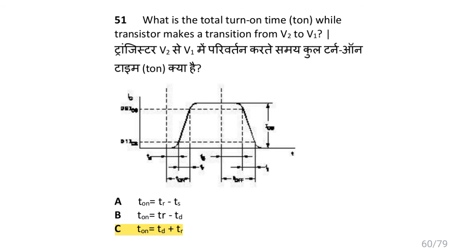What is the total turn-on time t_on while a transistor makes a transition from V2 to V1? i.e. t_on is equal to t_d plus t_r, where t_d is delay time and t_r is rise time.